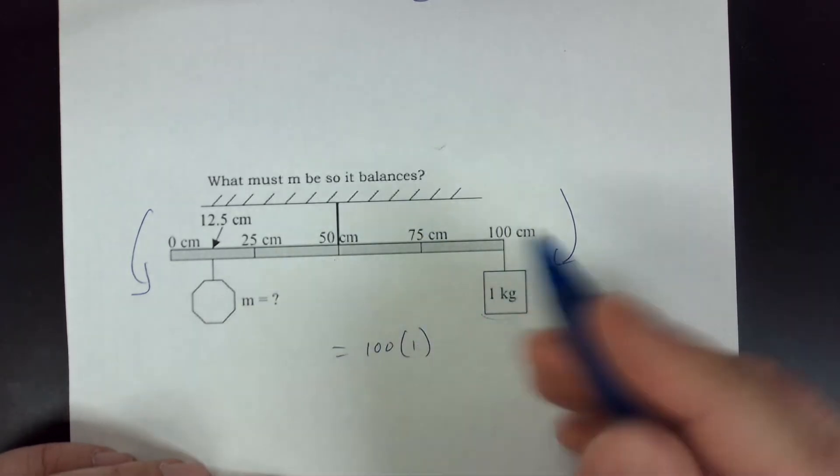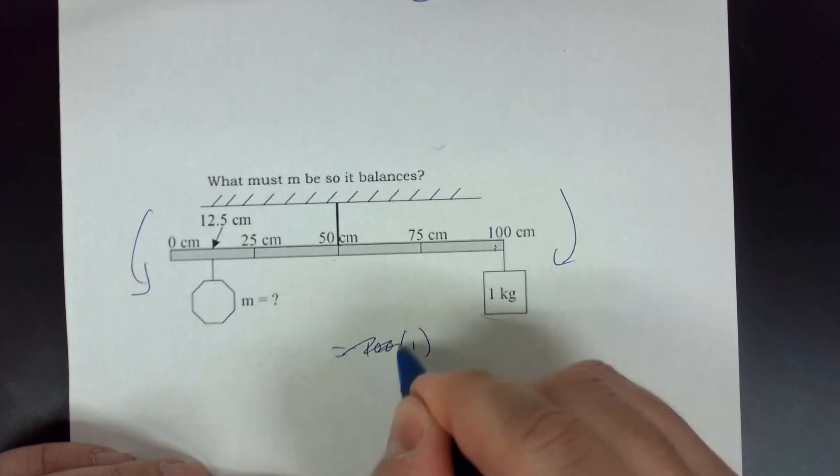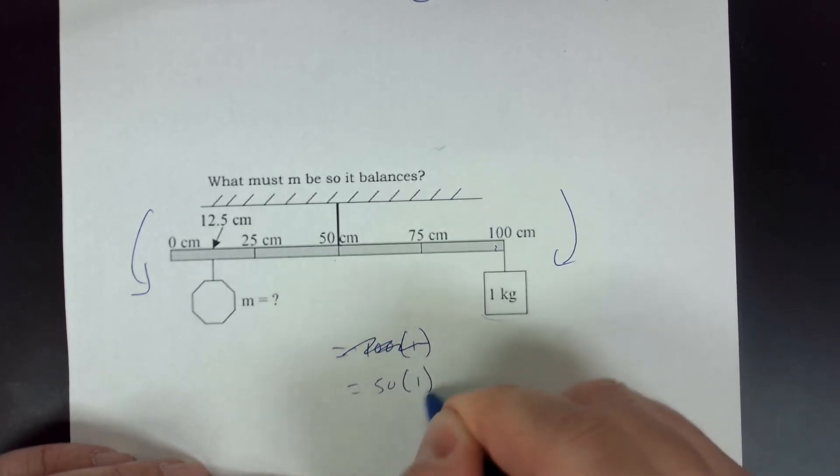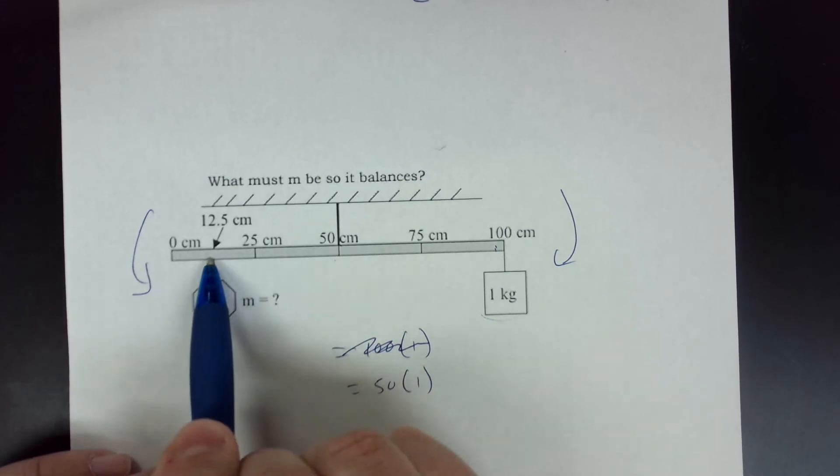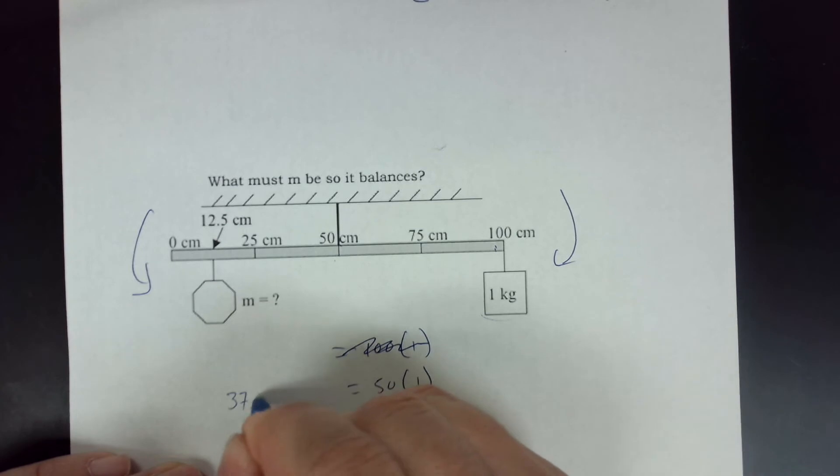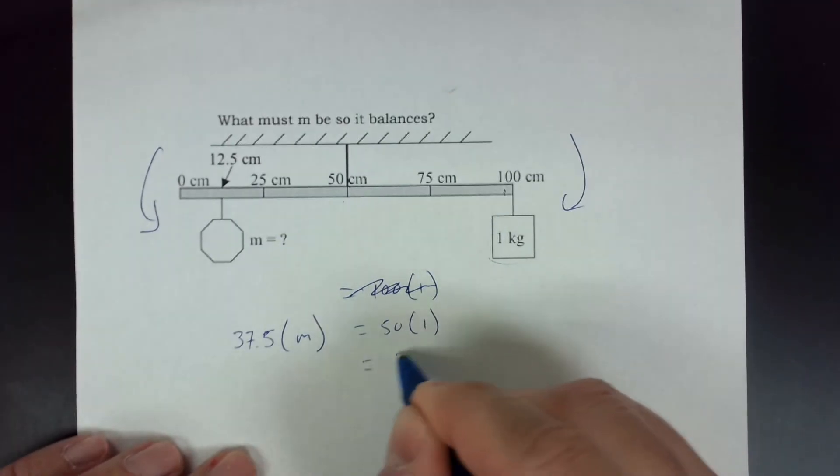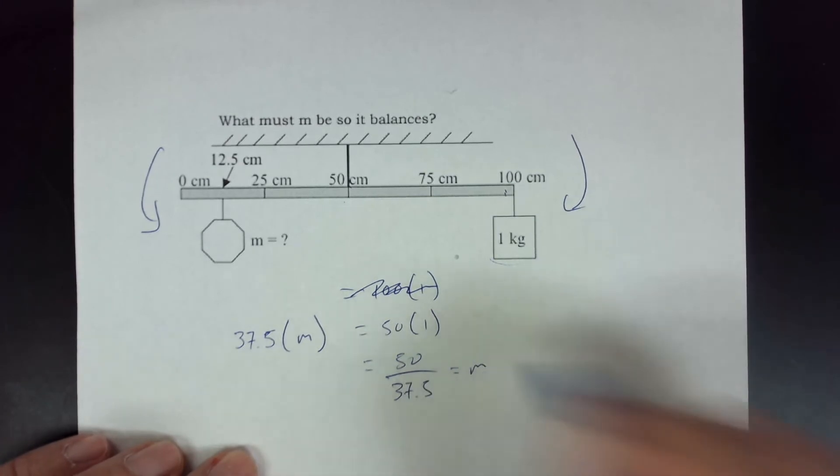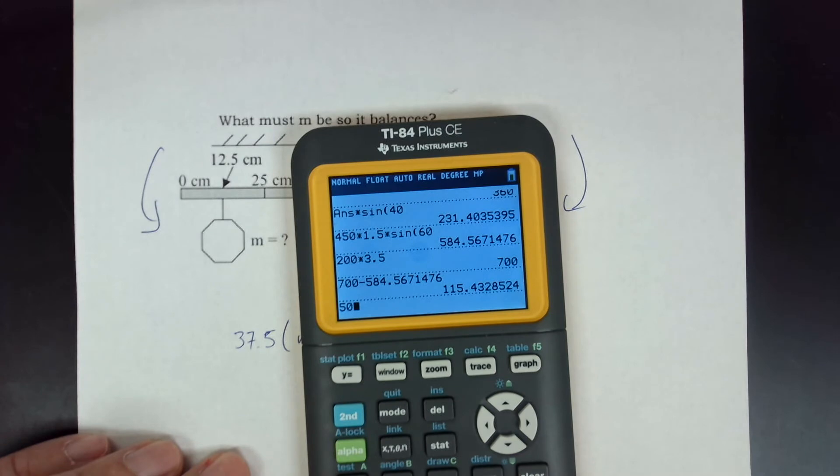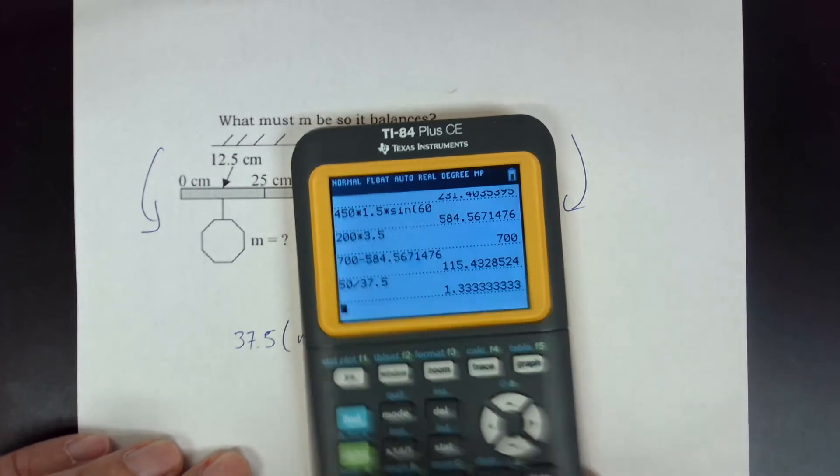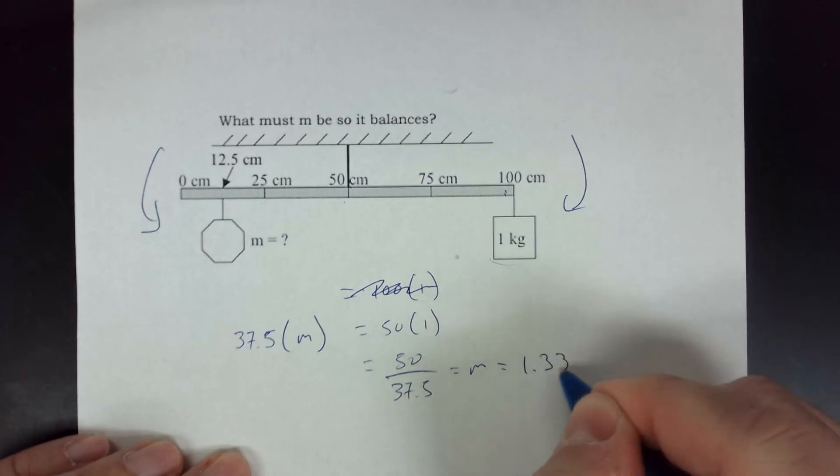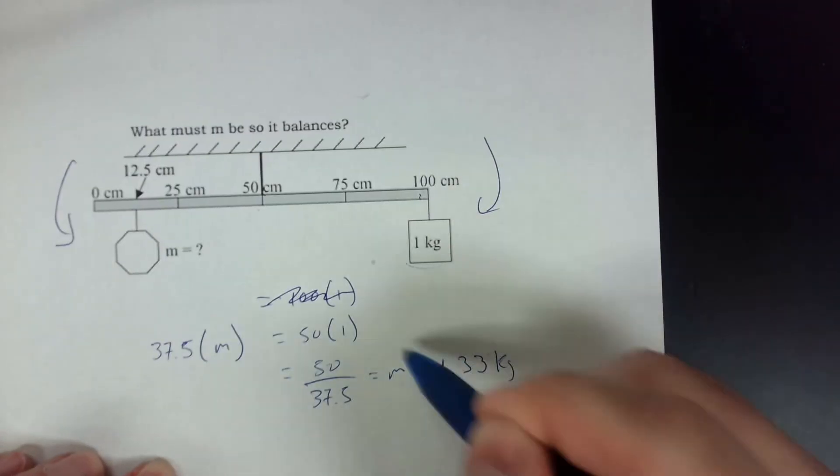And on the other side, oh no, I almost got fooled. That's 50 centimeters. So my torque is actually 50 times one. See, even I go too fast sometimes. So 50, that's 12 and a half. So that means the distance is 37 and a half. So this is 37 and a half times M. So now I can just solve. So 50 times one is 50. So 50 divided by 37 and a half is going to be my mass. So 50 divided by 37.5, 1.33. And I left it in kilograms. So it's going to be kilograms.